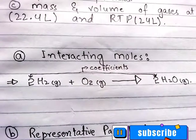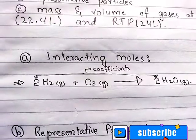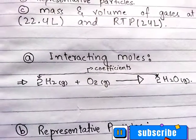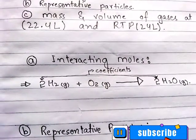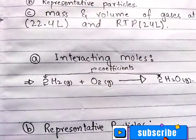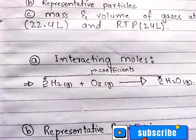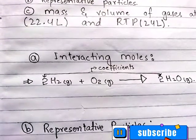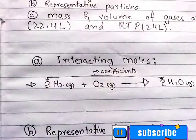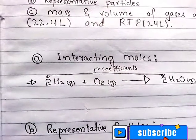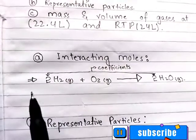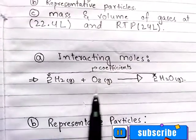The first part is interacting moles — that means how many moles are in a balanced chemical equation. In a balanced equation, we have to look at the ratio of the coefficients. We compare the coefficients to find out how many moles interact. We look at which coefficients are on the reactant side.